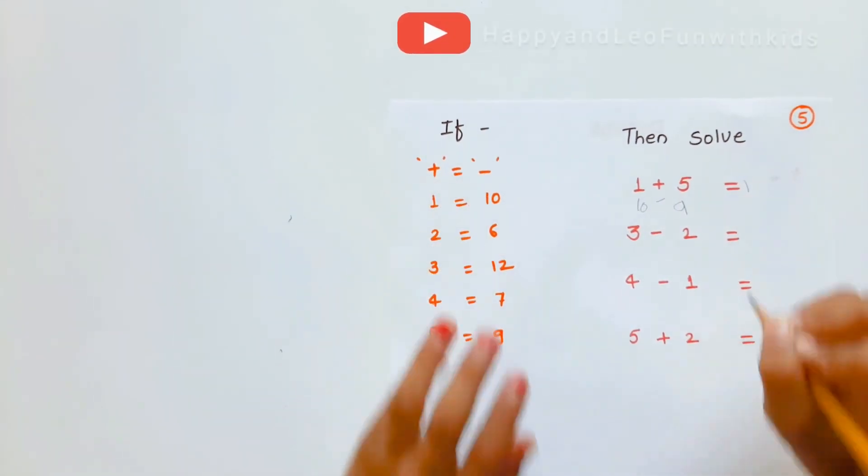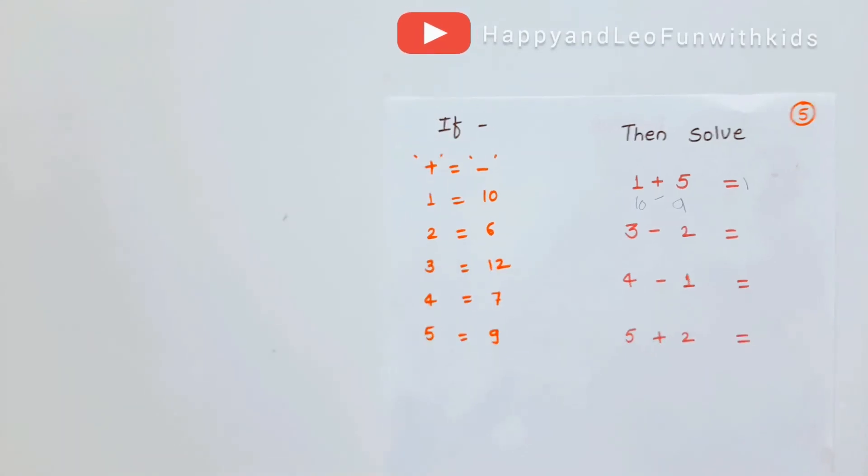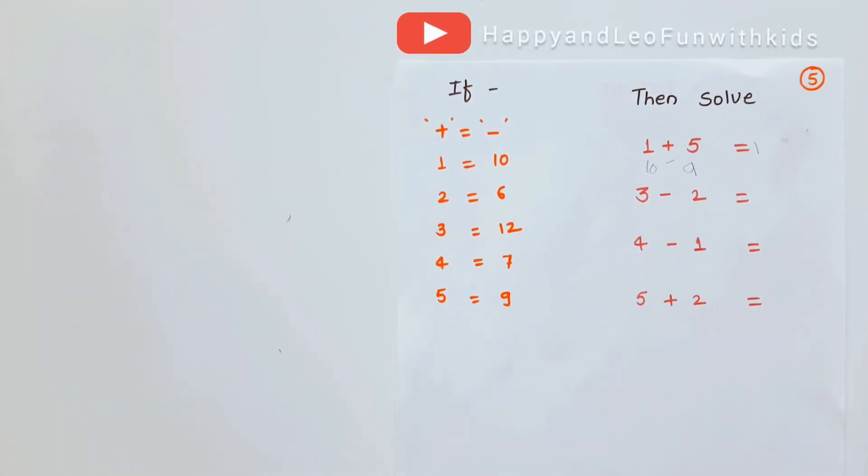Plus one. Likewise, you have to, five plus one, six. But it becomes one. Likewise, you have to solve this remaining. Okay.